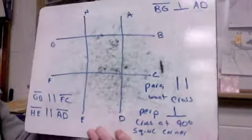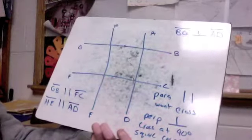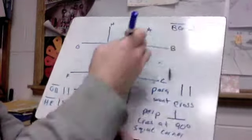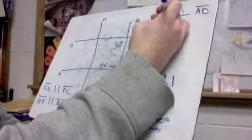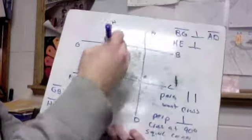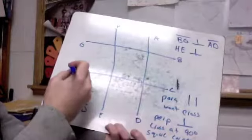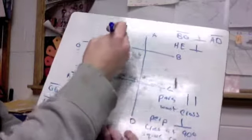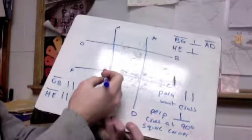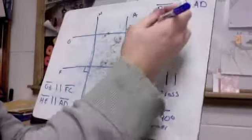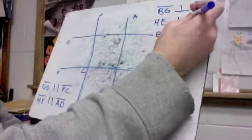And another perpendicular segment would be let's say HE again. Let's use HE. That is going to be perpendicular with FC because if I go FC here, HE here, we make this square corner right there. So it would be FC.